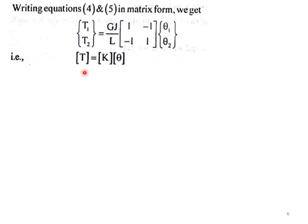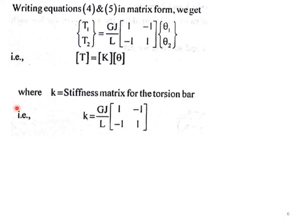Writing this in the simplest form, T is equal to K into theta. Here K is the stiffness matrix of the torsion bar, that is K is equal to GJ by L into 1 minus 1, minus 1, 1. This is the equation for elemental stiffness matrix of a bar which is subjected to torsion: K is equal to GJ by L into 1 minus 1, minus 1, 1.